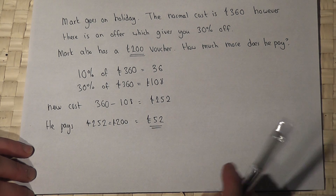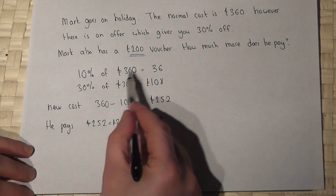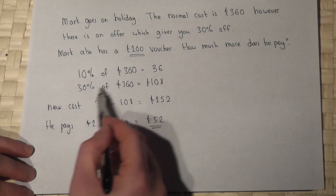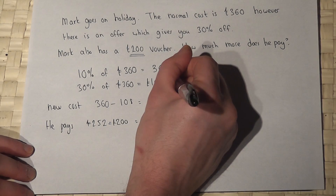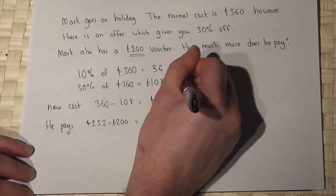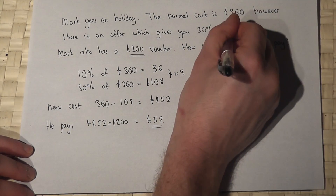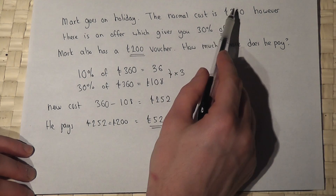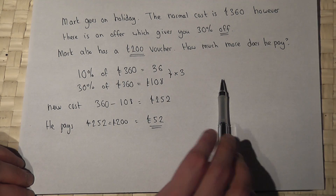The key points here are: for 10% we divide by 10, to find 30% we then times that by 3, and the word 'off' means subtracted from the original amount.